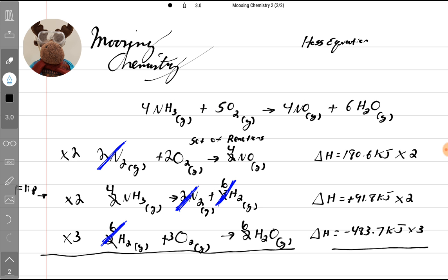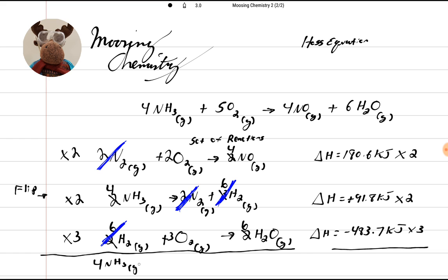Let's change our colors back to black here. So now, we have 4NH3 gas plus, look at this, 2 plus 3 make 5 oxygens. And we put the gas there. Yields 4NO plus 6H2O.